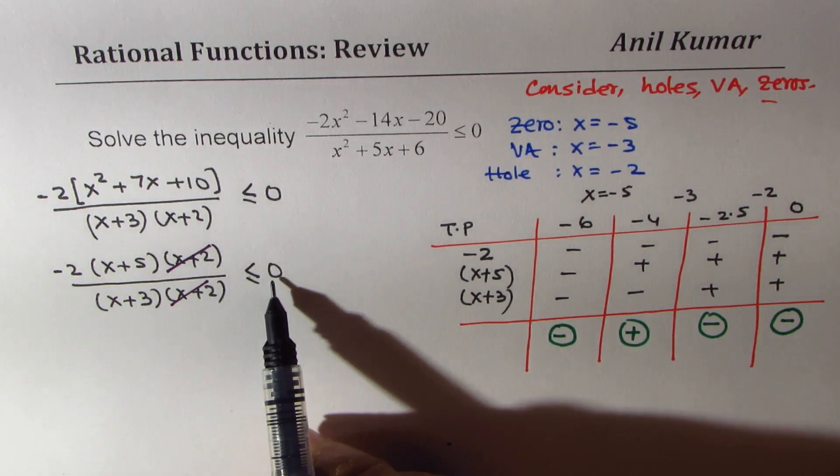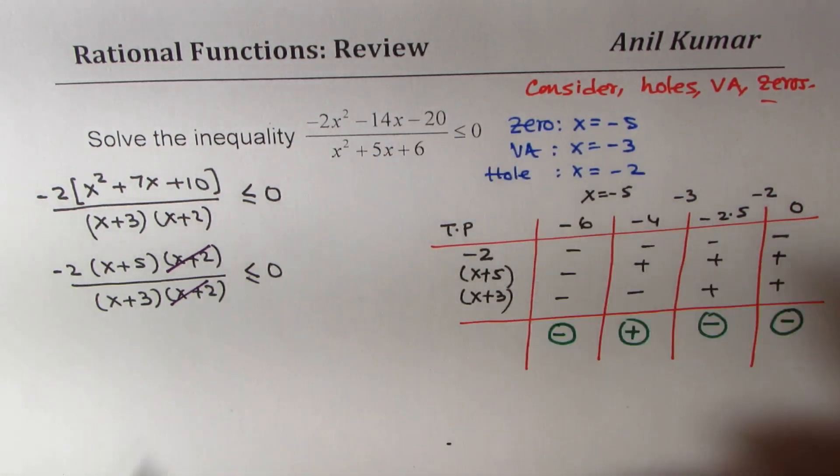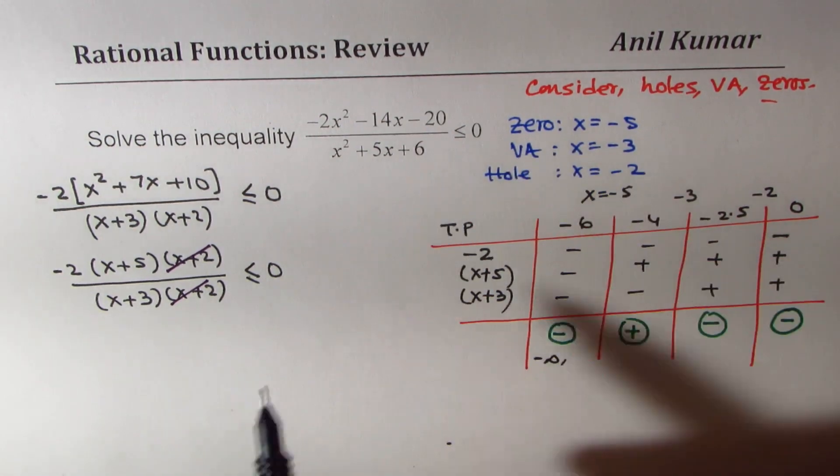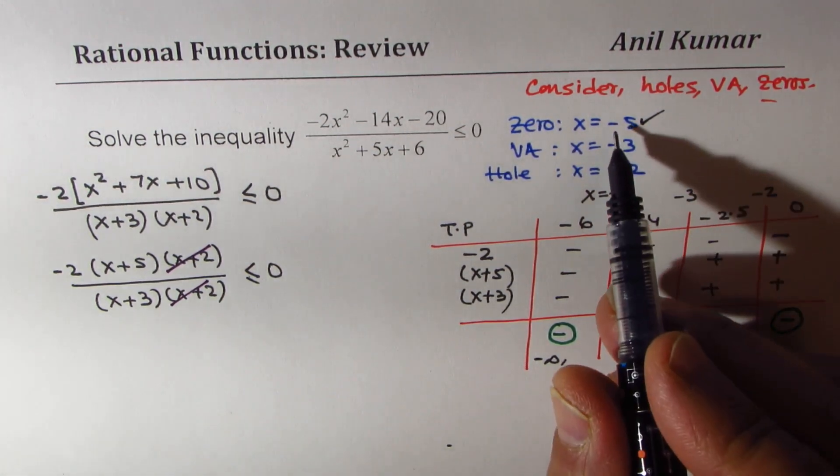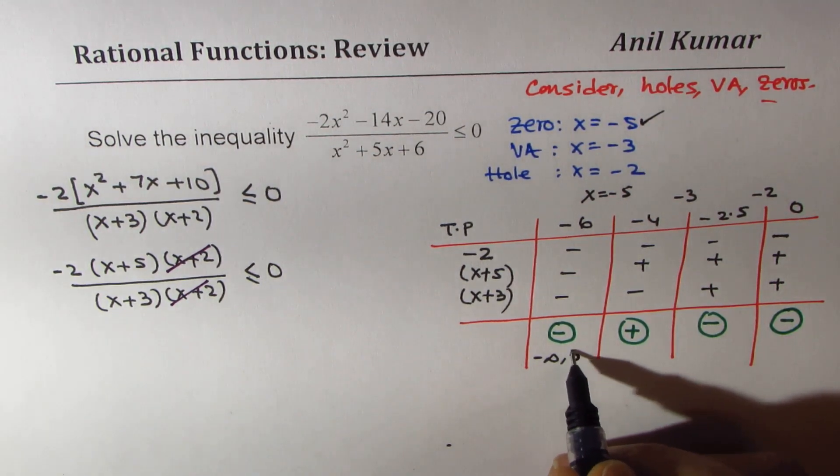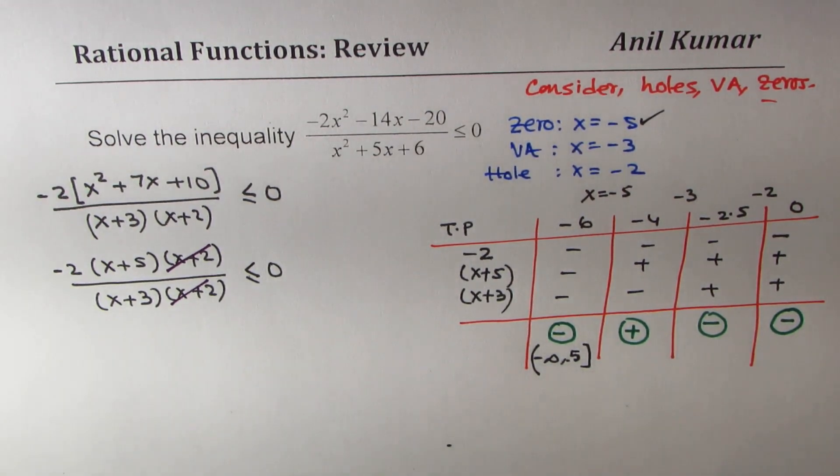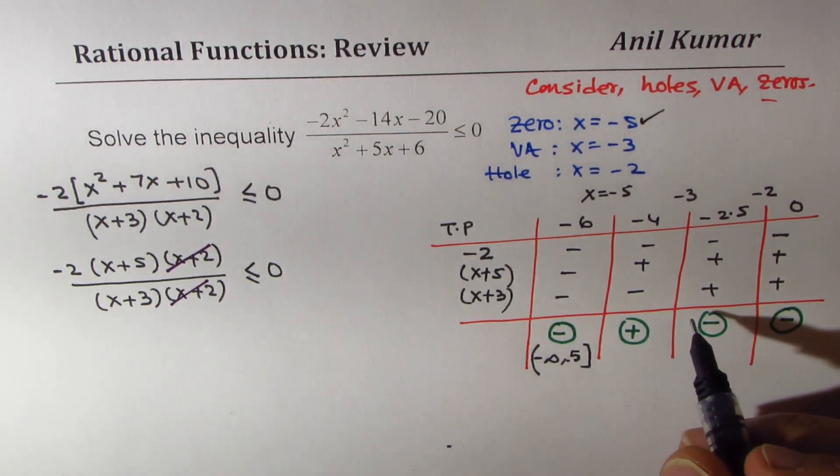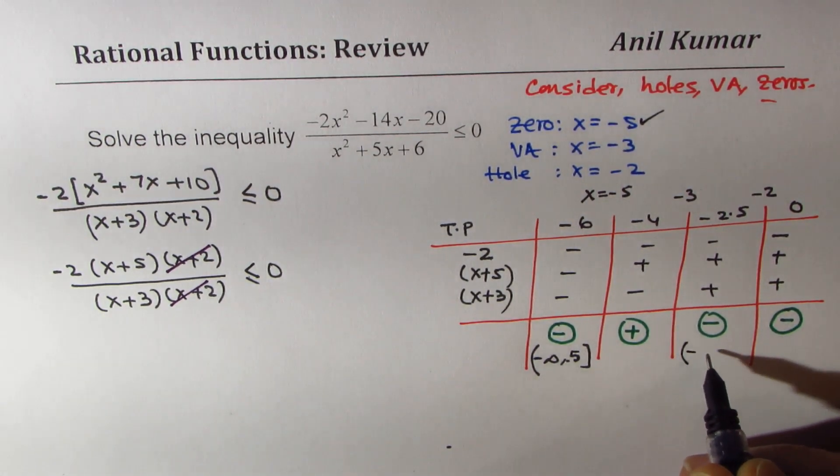Now we are looking for less than 0, that means we are looking for intervals where this particular function is negative. Now zeros could be part of solution, but not others. So minus 5 being a zero will be a part of solution, so we will write this minus 5 as included, and of course minus infinity cannot be included. Now a hole is a discontinuity, so minus 2 cannot be included. And minus 3 is infinite discontinuity, so that can also not be included.